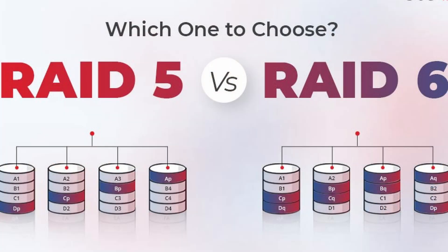My RAID configuration is RAID 6. What that means is if I have eight drives, two of those drives are used for controlling. So if I have eight drives, I can lose up to two of the hard drives and I still have my information. This has come in handy over the years — I've lost a hard drive and was able to hot-swap it.